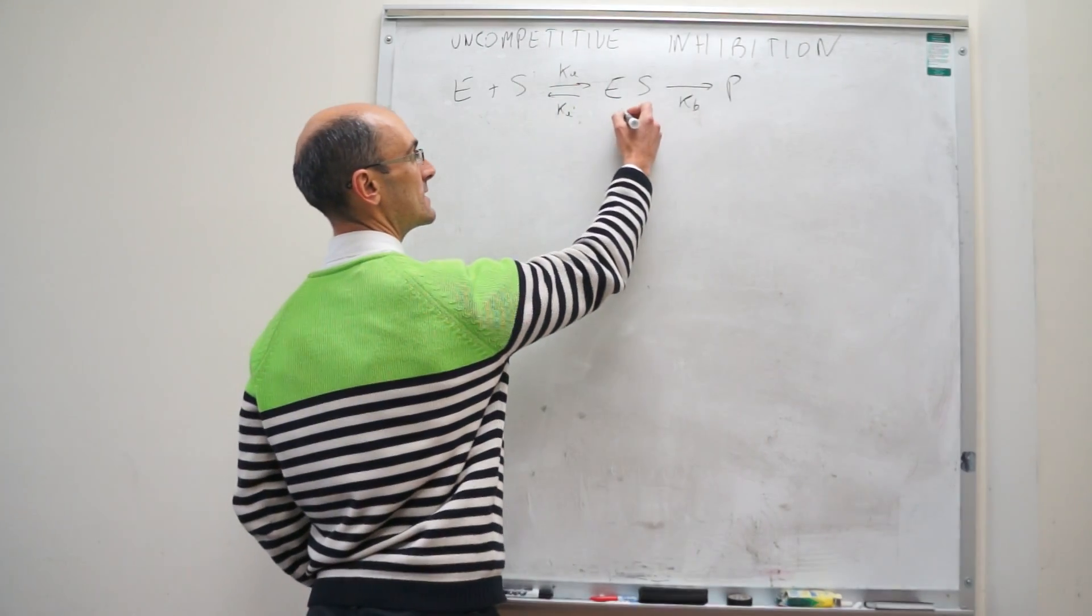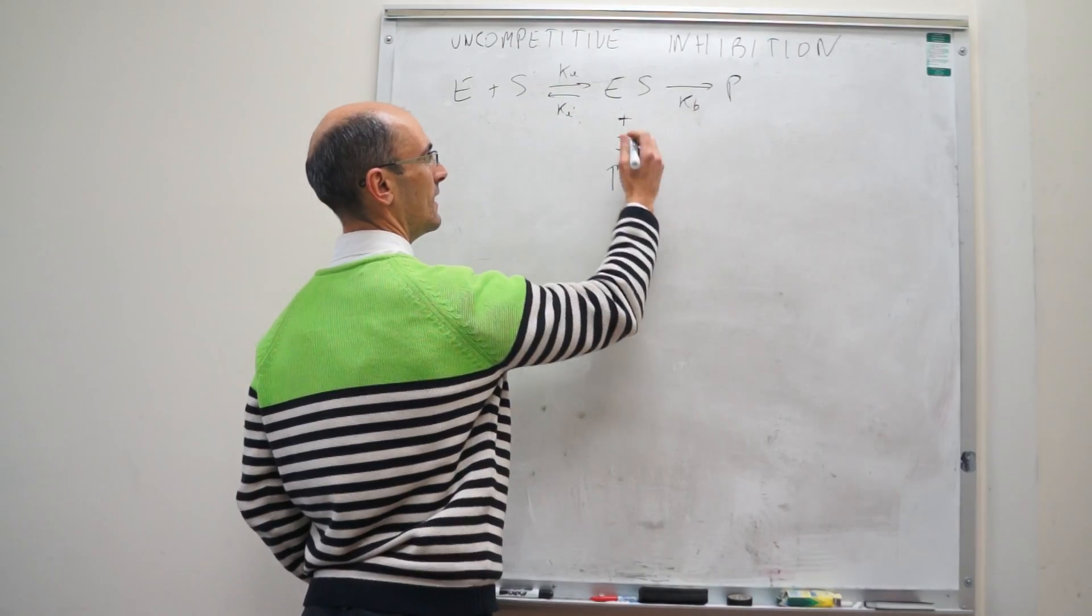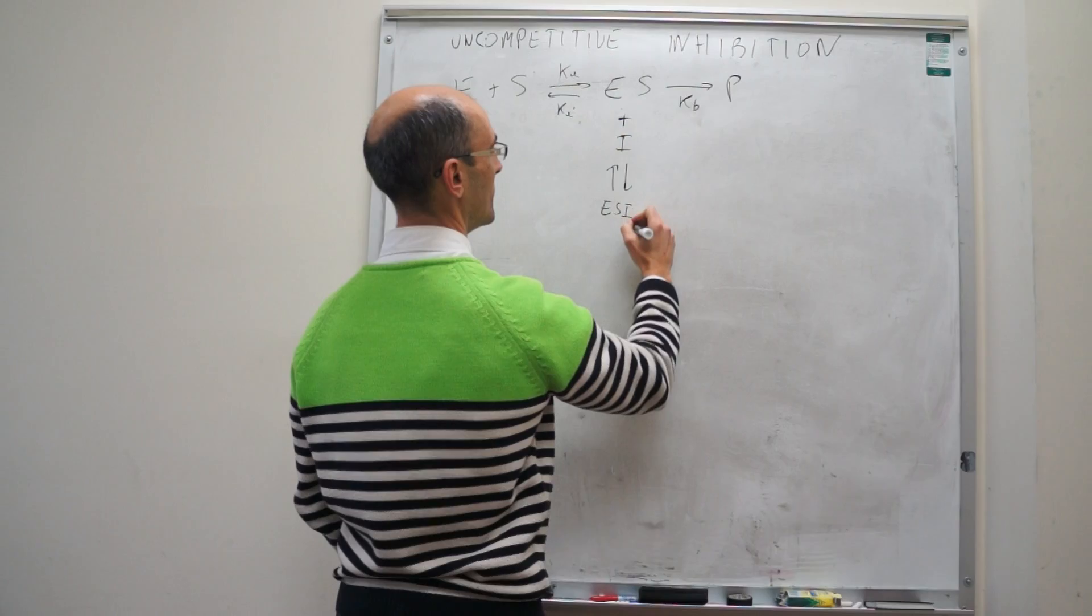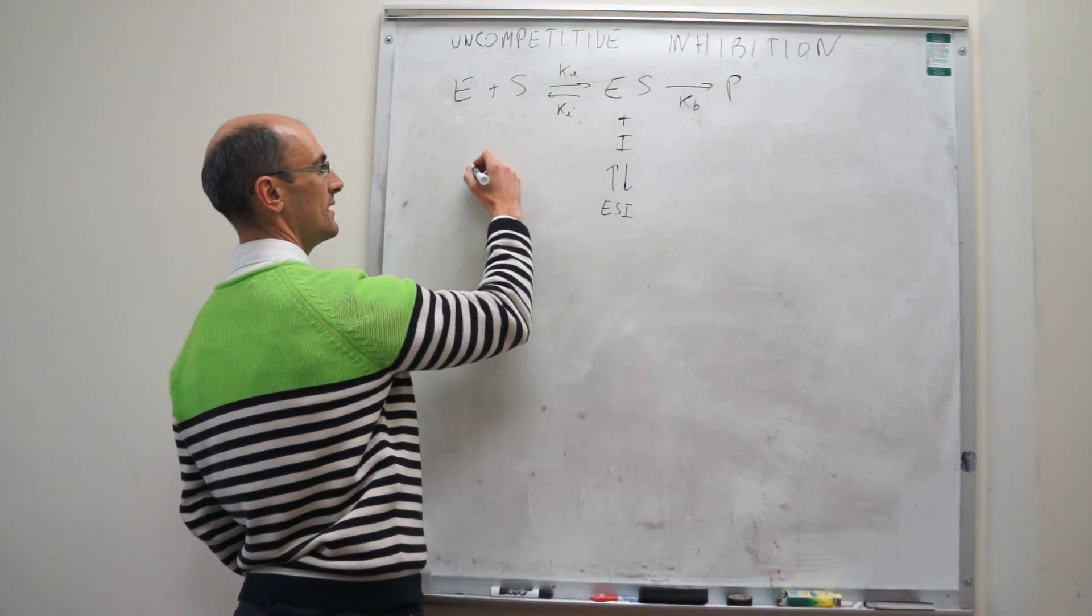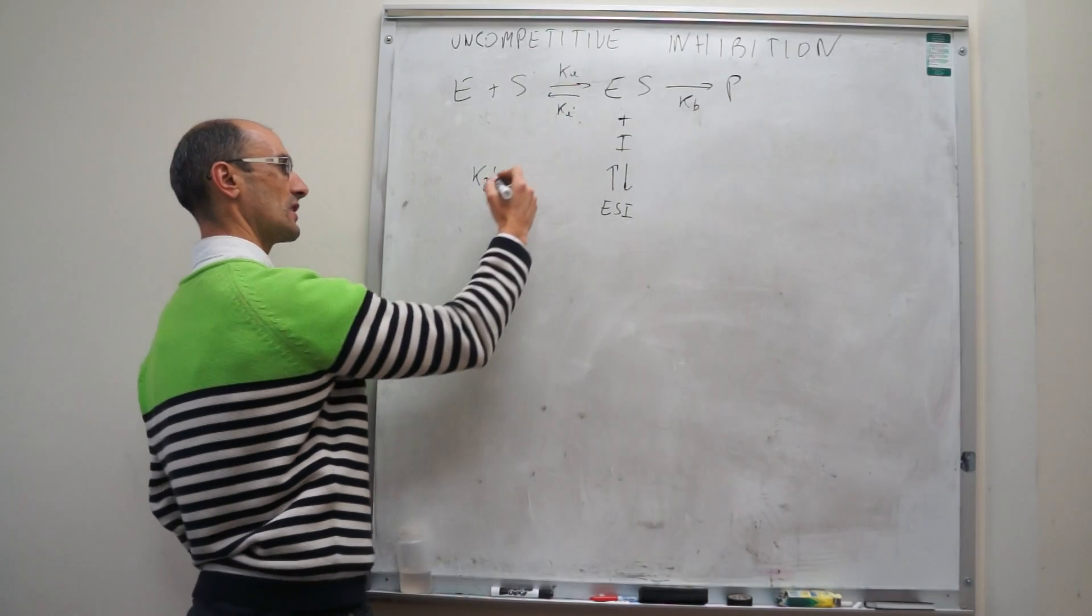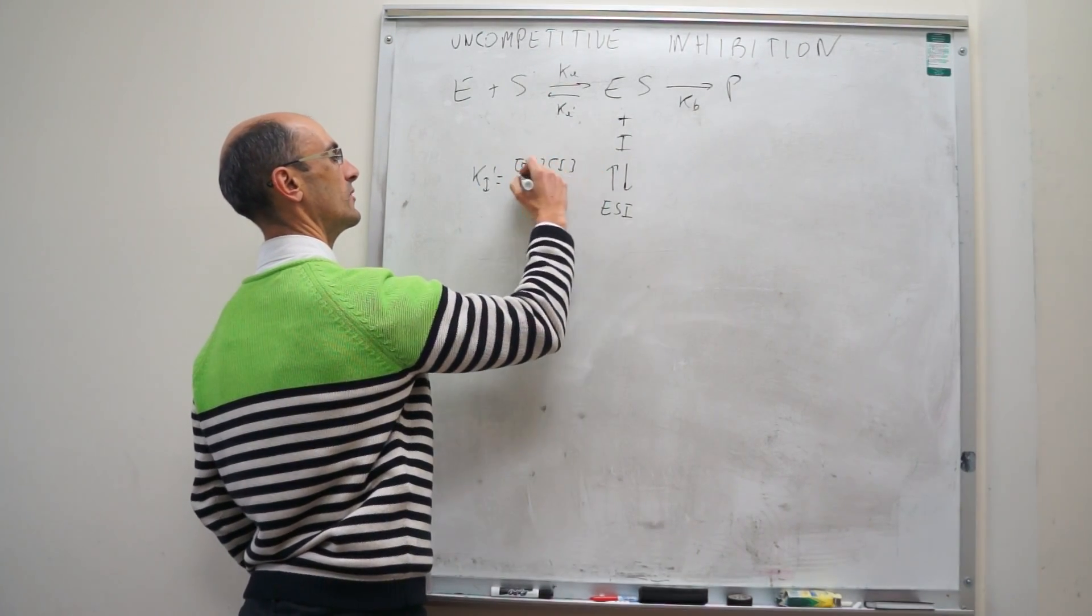Uncompetitive inhibition is one in which the inhibitor can only bind to the enzyme-substrate complex, not to the free enzyme, and generate a complex ESI, and then that has a dissociation constant KI' equal to ES times I over ESI.